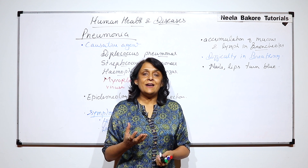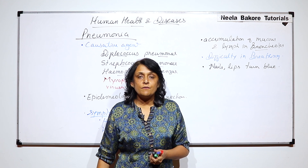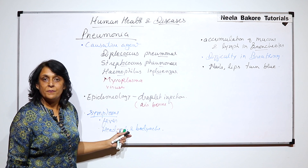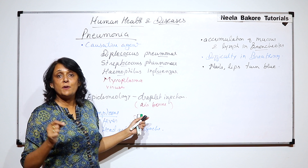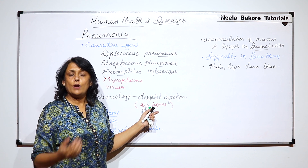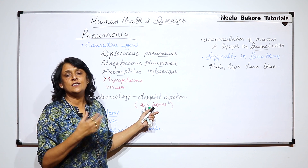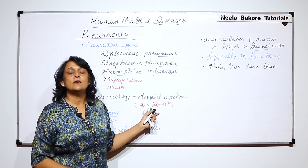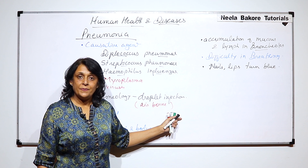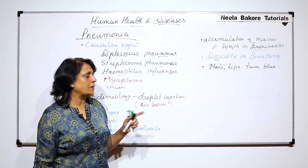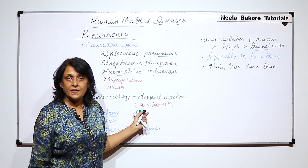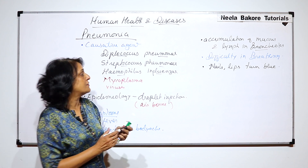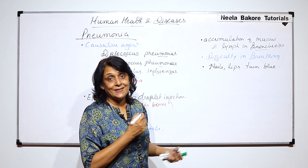How do we prevent it? We can prevent ourselves from getting this infection by isolating the infected person, because this infection is going to spread through droplets. So if the infected person sneezes, coughs, or even talks, those droplets will carry the pathogen. Isolating the patient is the best method by which we can protect ourselves.